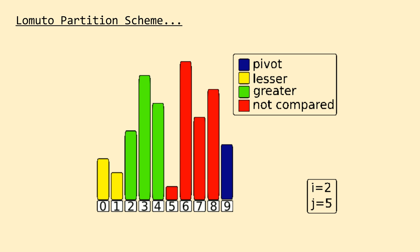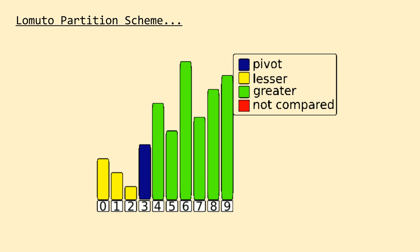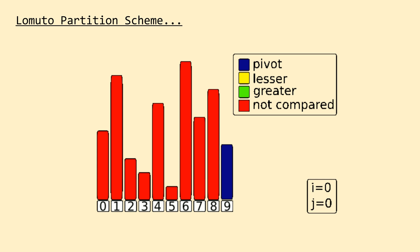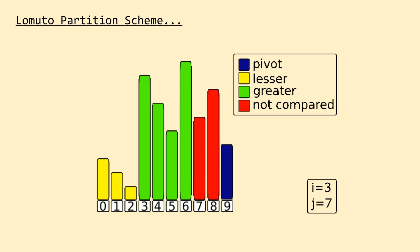One downside to the Lamuto scheme is that it statically uses the last value in the array as the pivot on each partition call, whereas in our prior video we used the randInt function to randomly select our pivot. This could easily be implemented on top of the Lamuto scheme by finding a random pivot and swapping it with the last item in the array before continuing normally. We'll be sticking to the traditional Lamuto scheme for simplicity.